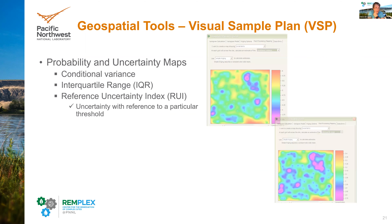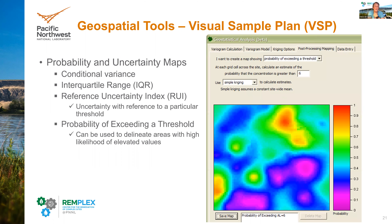VSP also gives you a reference uncertainty index, which is related to uncertainty surfaces. It provides a probability map where the reference scale is always zero to one. The probability presented is the probability of exceeding a given threshold in a particular cell. In this case, the dialogue box shows a chosen threshold of six units, and using simple kriging — probably the most widely used kriging model — you can get a probability of exceeding that value at every grid node or cell in your interpolation surface. This is good for guiding decisions or identifying additional sampling locations.